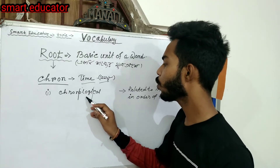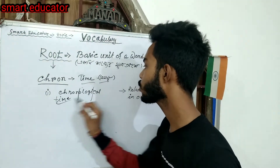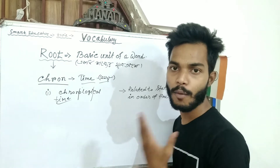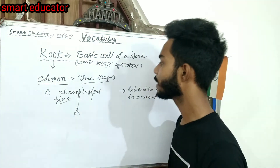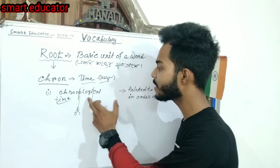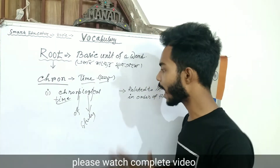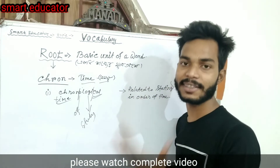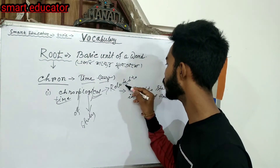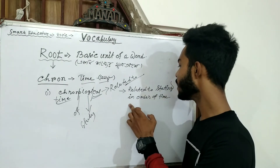Then 'ology' — the 'o' means 'of,' and 'logy' or 'logi' means study. The 'cal' part means related to. So: chron = time, o = of, logy = study, cal = related to. Chronological means related to the study of time, or stating things in order of time.